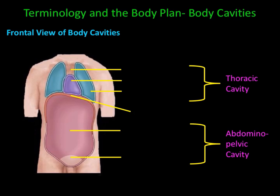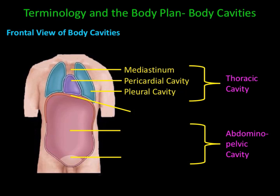The thoracic cavity has three subdivisions. The first is the mediastinum, where you find respiratory passageways and the heart. The second is the pericardial cavity, where you'll find the heart. The third is the pleural cavity, where you'll find the lungs. The abdominal pelvic cavity has two subdivisions: the abdominal cavity and the pelvic cavity.